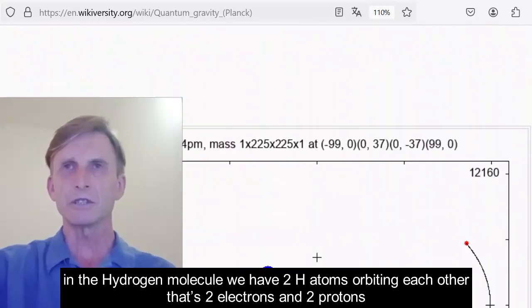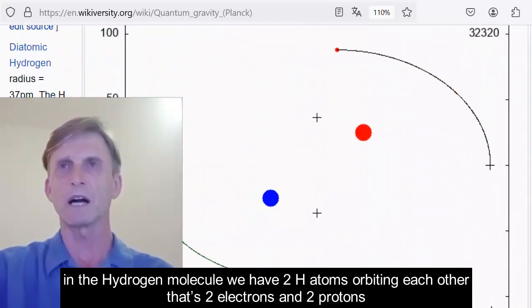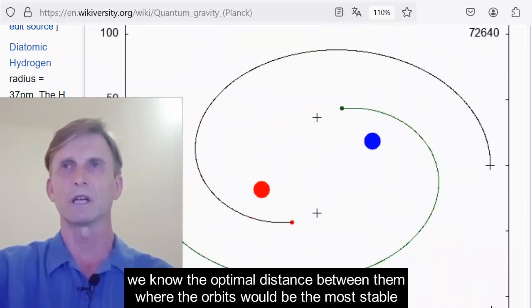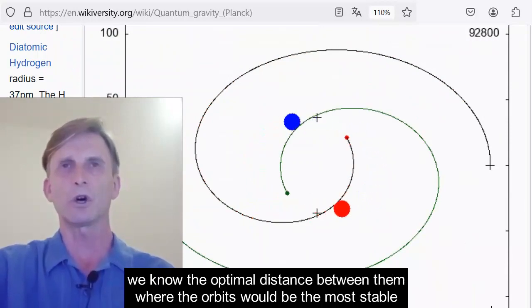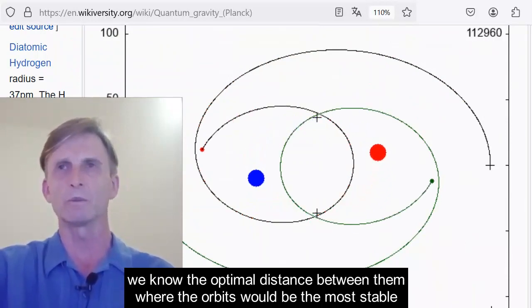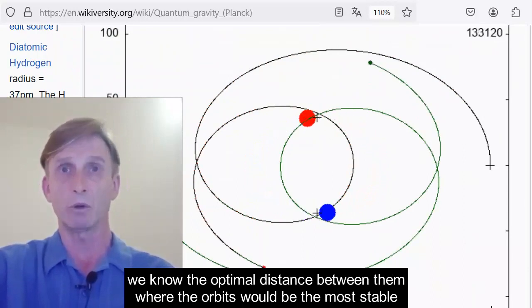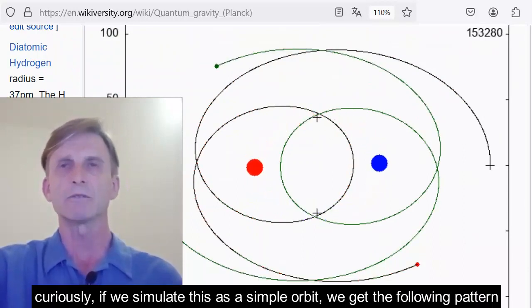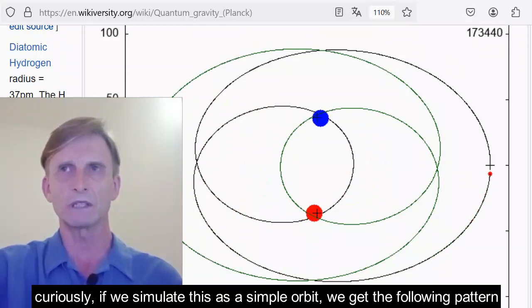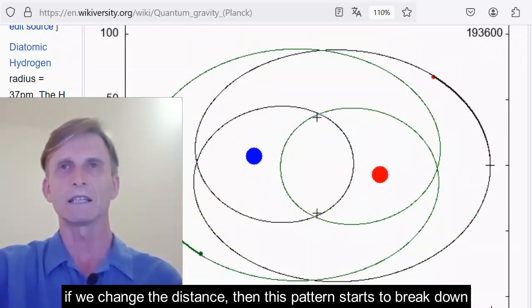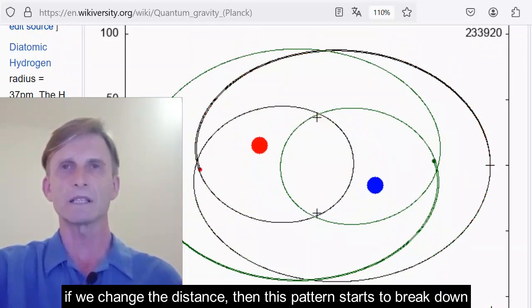In the hydrogen molecule, we have two hydrogen atoms orbiting each other. That's two electrons and two protons. We know the optimum distance between them where the orbits will be the most stable. Curiously, if we simulate this as a simple orbit, we get the following pattern. If we change the optimal distance, then this pattern starts to break down.